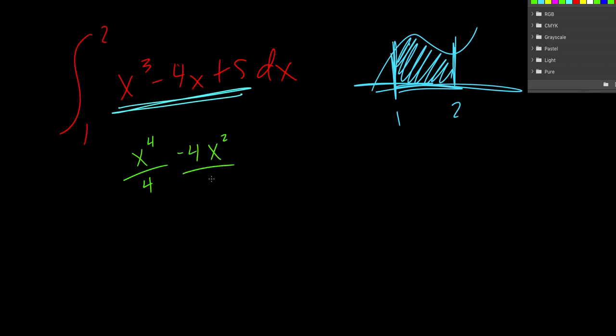Raise the exponent by 1, divide by the new exponent, and then raise the exponent by 1, divide by 1. Then we're going to evaluate this from 1 to 2. And I'm going to replace this negative 4 over 2 with just a negative 2, because those would cancel.